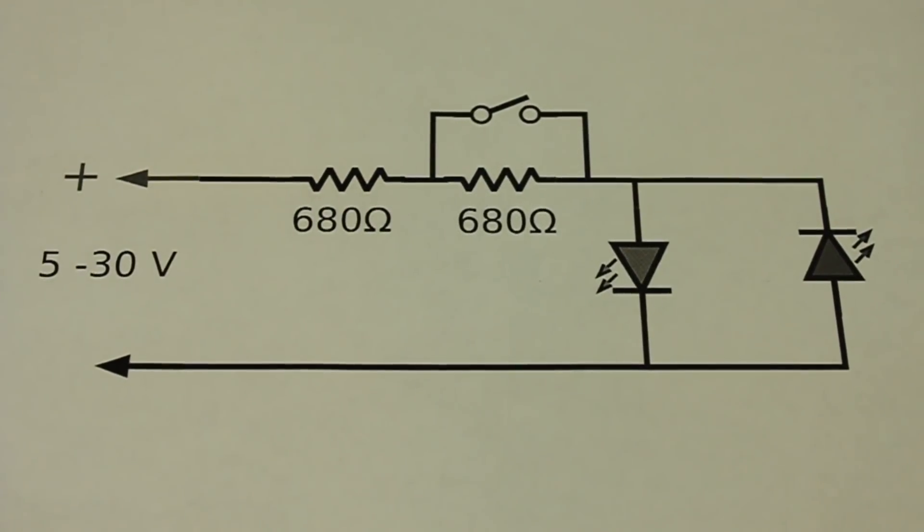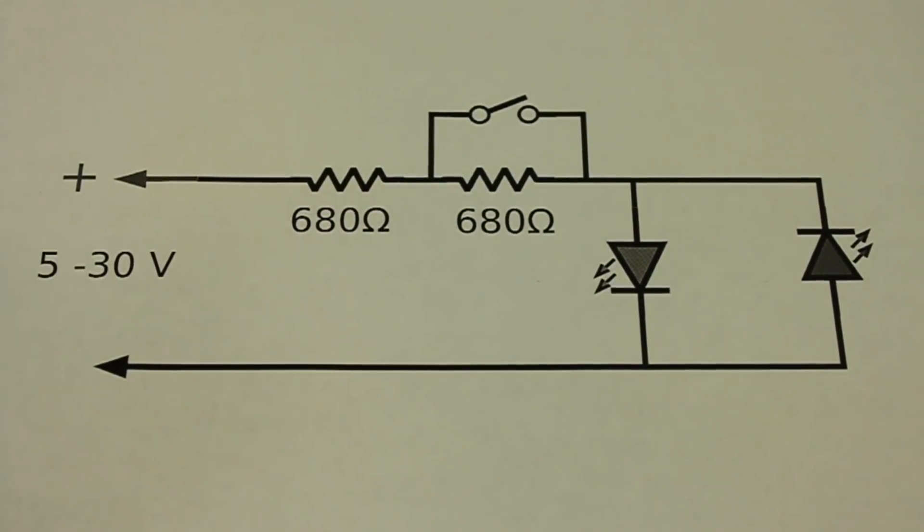This is the circuit of the detector and let me explain how it works. We have two LEDs connected with opposite polarities.